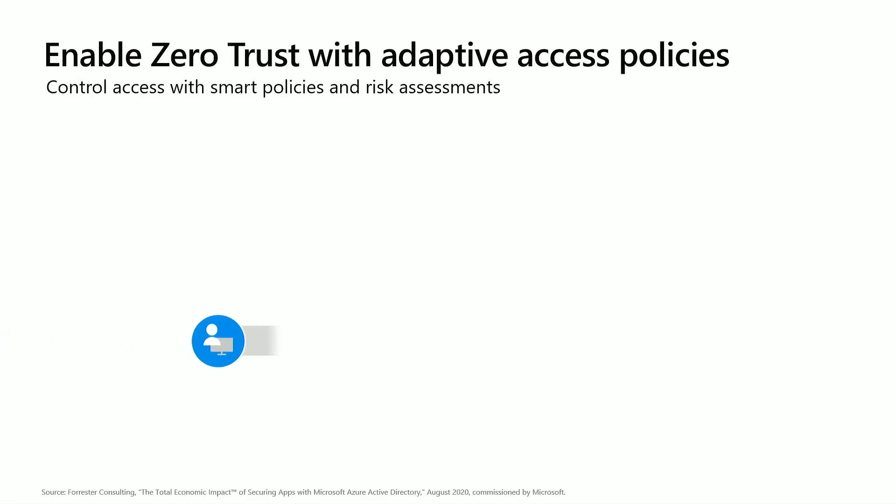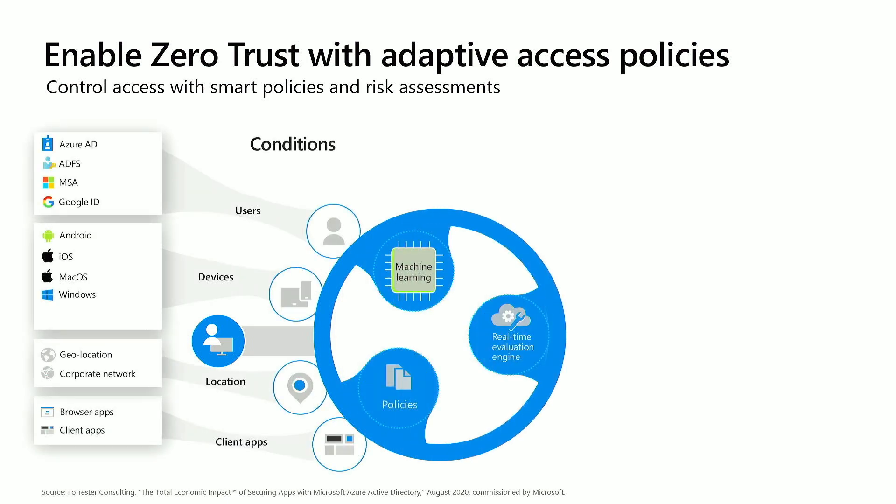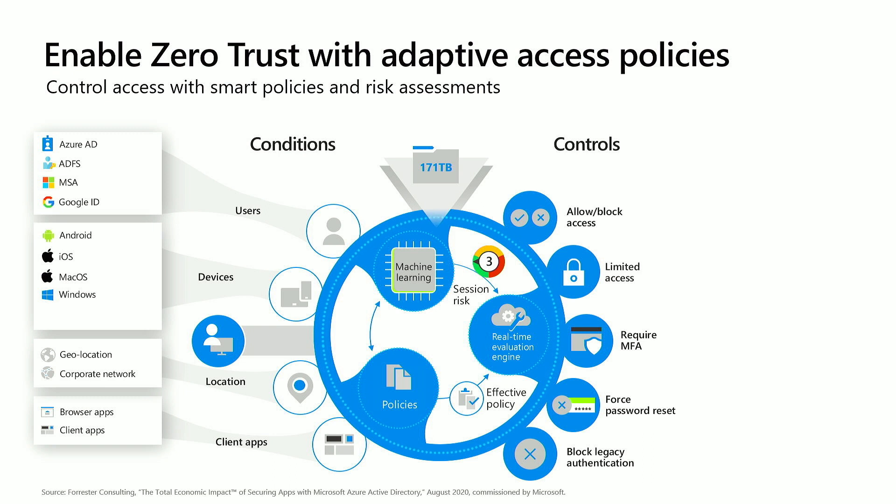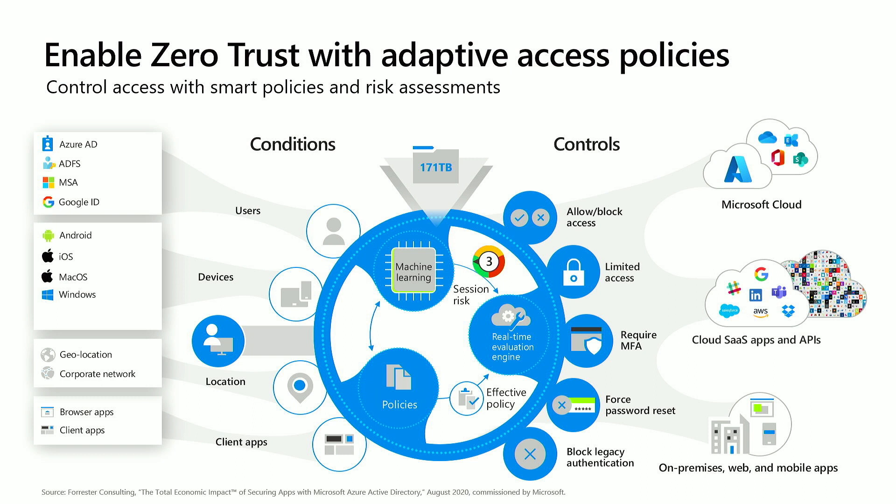What is an adaptive access policy? When I am trying to access any application, the solution automatically looks at the user, the device, the application, and where I am logging in from. Based on this, it applies machine learning to decide: is it really Mohammed who is claiming he is? Even if he's using the password, should I give him access? If the AI engine decides it's a legitimate session, it will grant access. If not, it will automatically deny access or challenge with multi-factor authentication, or even limit access to a read-only session. These capabilities apply to your cloud applications — whether Microsoft or any cloud solution provider — and your on-premises web applications as well.